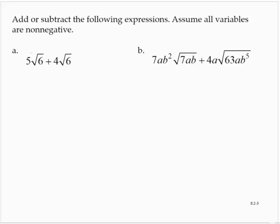Add or subtract the following expressions. Assume all variables are non-negative. Part a: 5 times the square root of 6 plus 4 times the square root of 6.